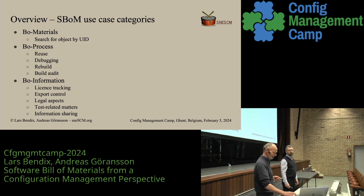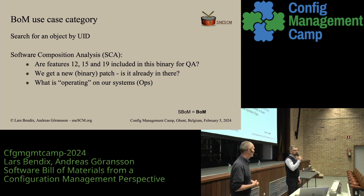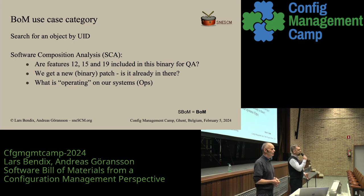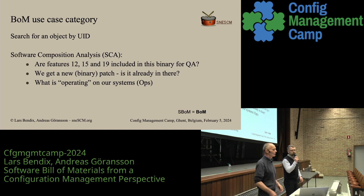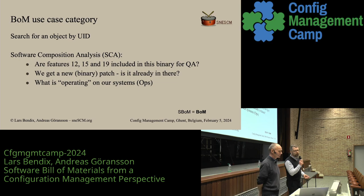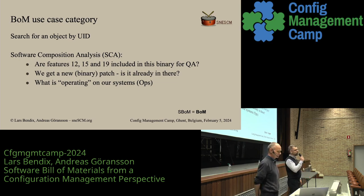Starting with the first use case category, the Bill of Material is a list of things that went into the build or came out of the build. It's used for searching for an object using its unique ID. We can also analyze what we built — for example, are these features included in this build? Is this new library already in or did we miss it? And what is running in our systems right now, to make sure that when we update something, we don't miss anything.